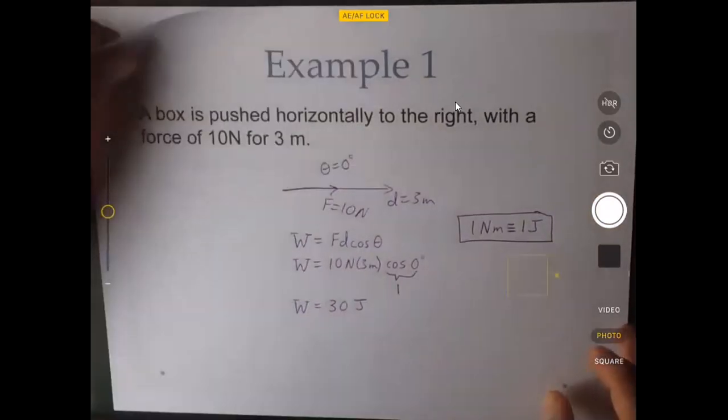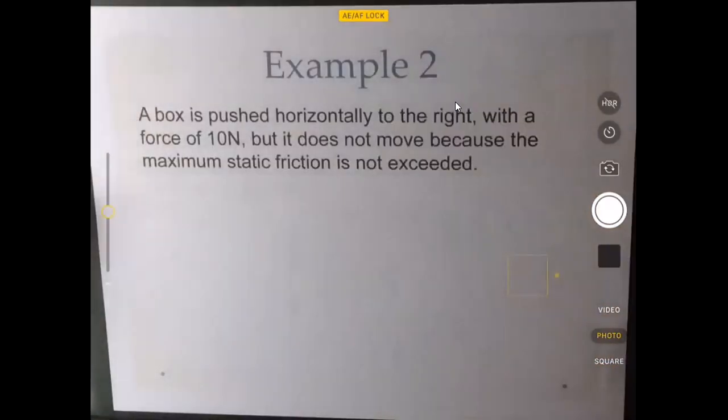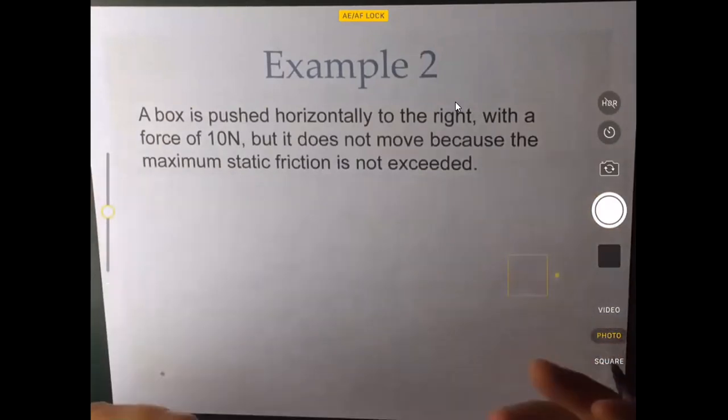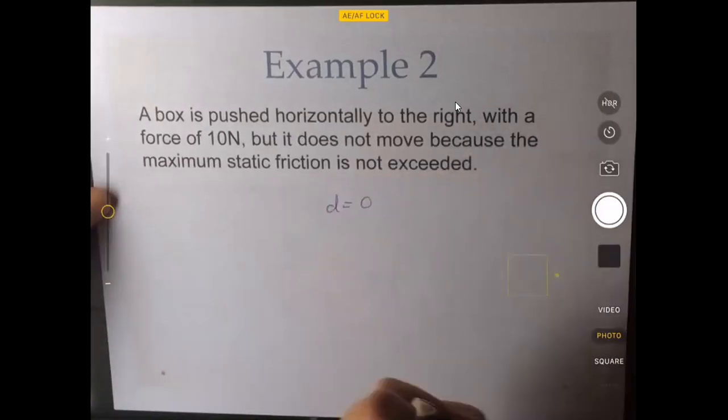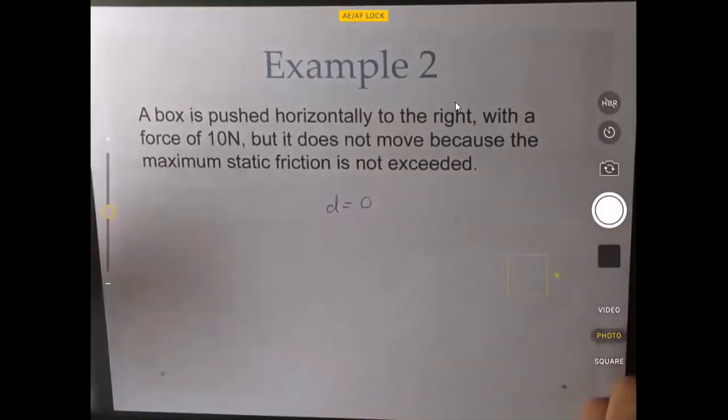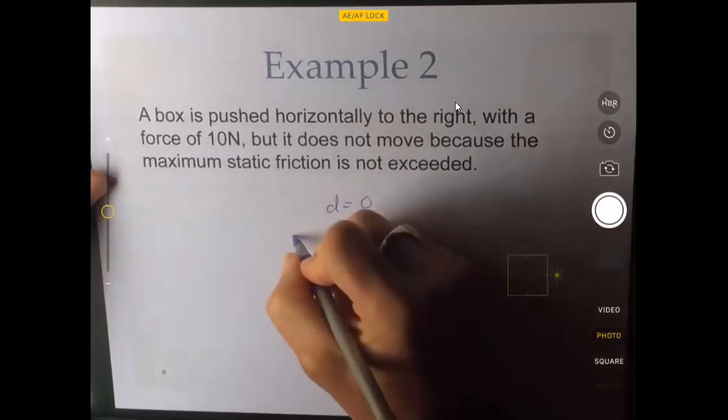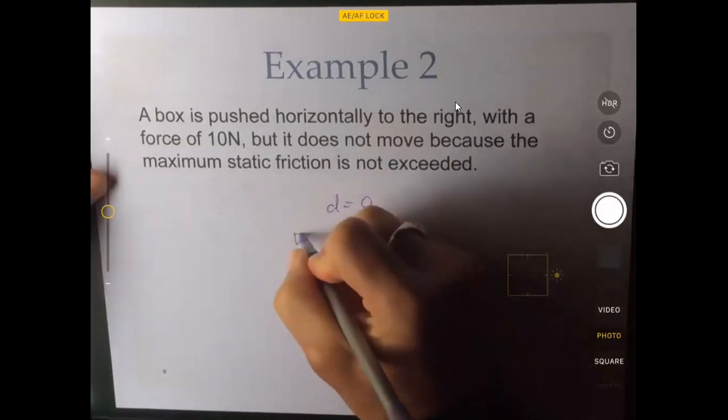Let's go on to another example, where we have a box pushed horizontally to the right, also with a force of one newton, but it doesn't move. So it's on some rough surface. Maybe it's sitting on your front lawn, which has lots of friction because of the grass. And in this case, it doesn't move at all. So the displacement is 0. So we can't really draw a displacement vector because it doesn't go anywhere. And so let's skip drawing the work diagram and just do the calculation.